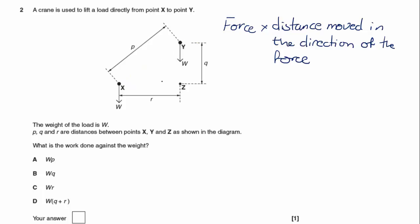In the horizontal direction, there are no forces acting, so we're not doing any work in the horizontal direction. We're only working by moving against the weight, which has got no horizontal component, so it's going to be Q. So the force multiplied by the distance moved in the direction of the force, well, the force is W, and the distance is Q, therefore our answer is B.